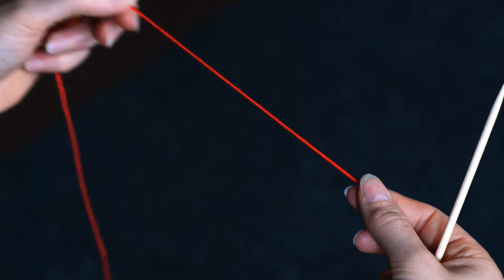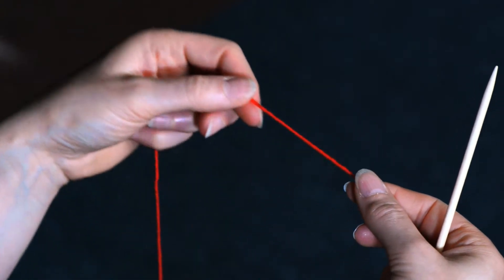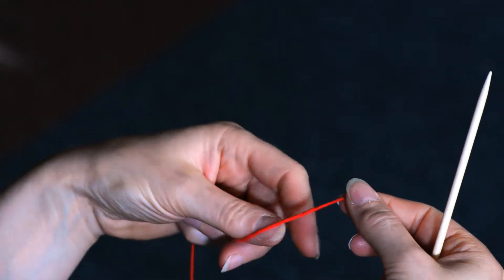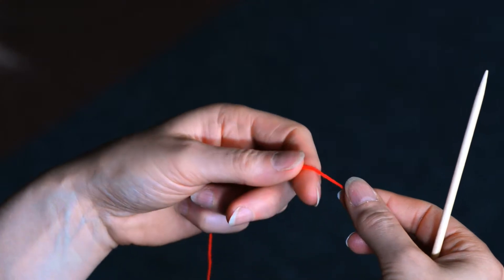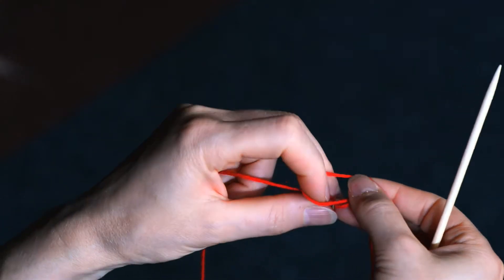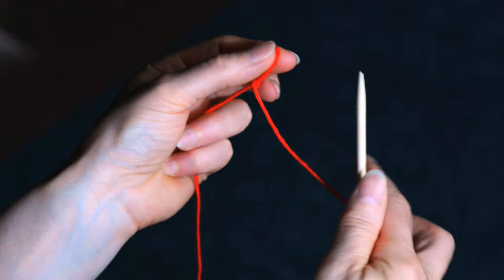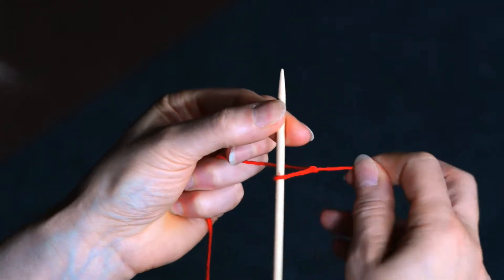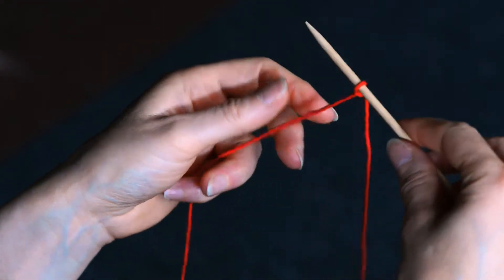Measure out the yarn that you're going to need, around two centimeters for every stitch you're going to cast on. Make a slip knot, put it on the needle, and hold your needle in your right hand.